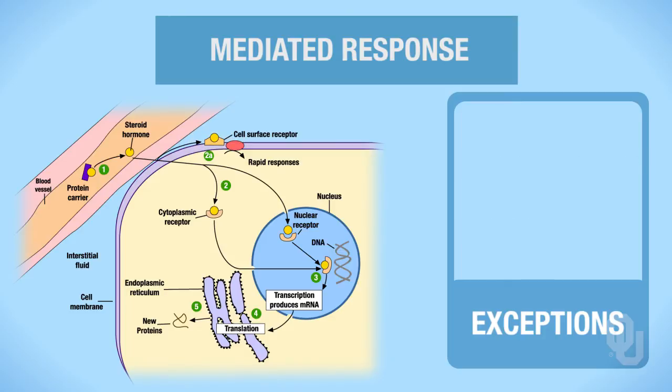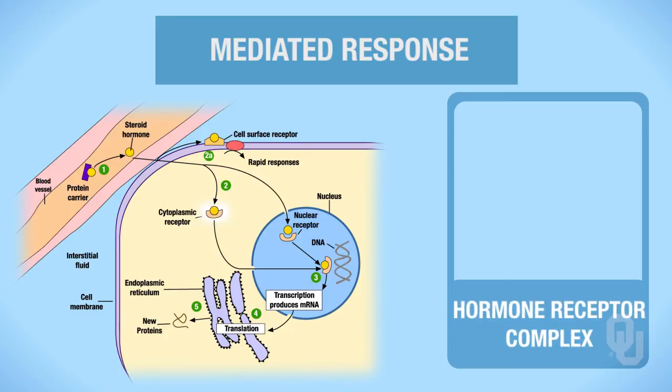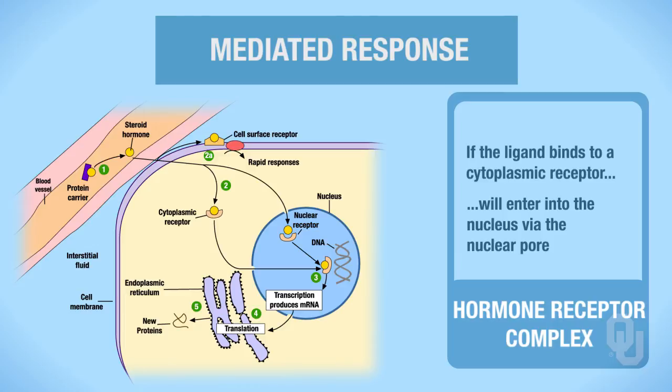Once the ligand binds to the receptor, you form a hormone receptor complex. That occurs whether it's a cytoplasmic or a nuclear receptor. If the ligand binds to a cytoplasmic receptor, then that is going to enter into the nucleus via the nuclear pore.